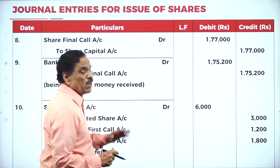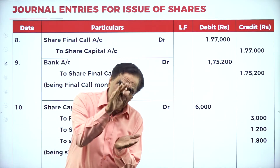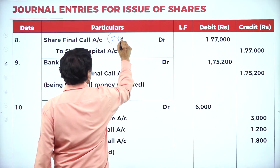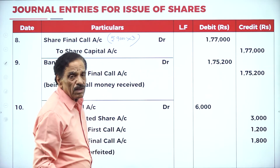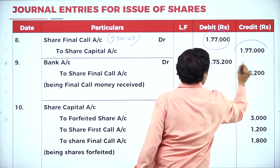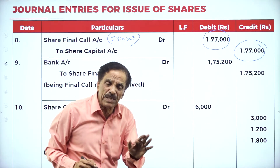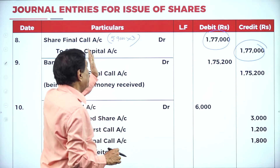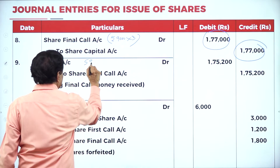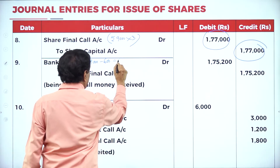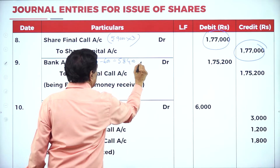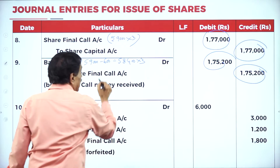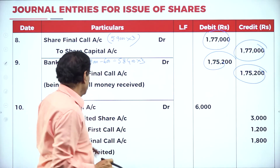Final call entry: Share Final Call Account Dr. When making the final call, you give a chance to the second man (600 shares). You call for only 59,000 shares (60,000 minus 1,000 already forfeited) at the rate of rupees 3 — due entry 1,77,000. However, the 600-shareholder also fails to pay, so actual receipts come from 59,000 − 600 = 58,400 shares × 3 = 1,75,200.